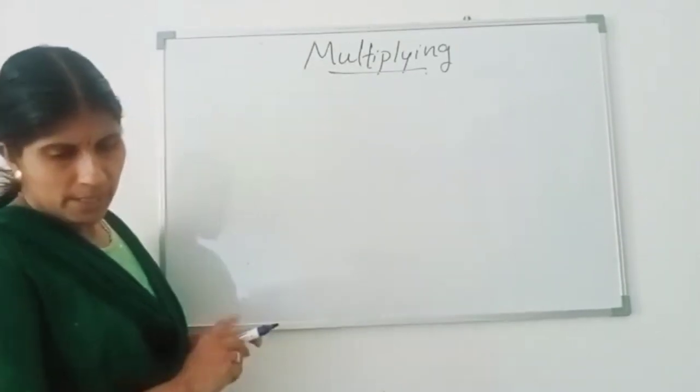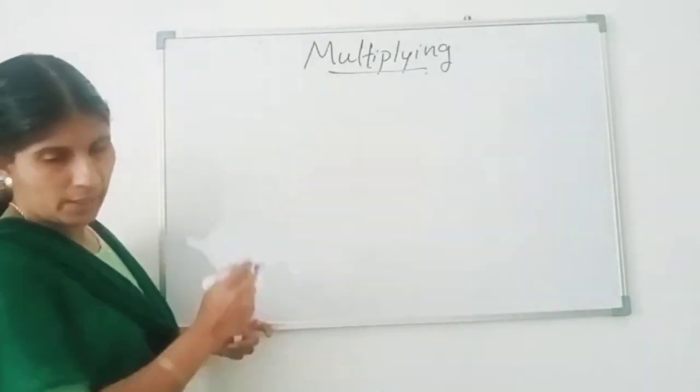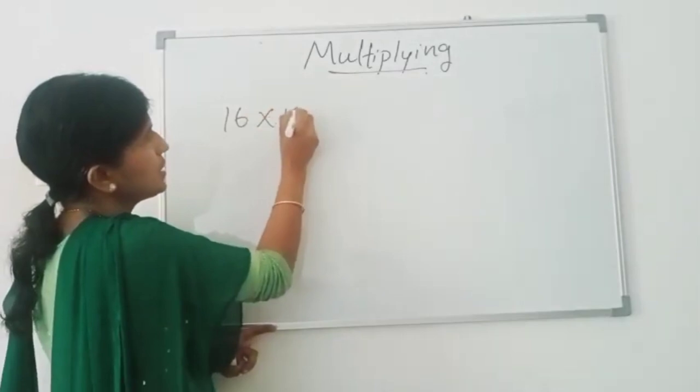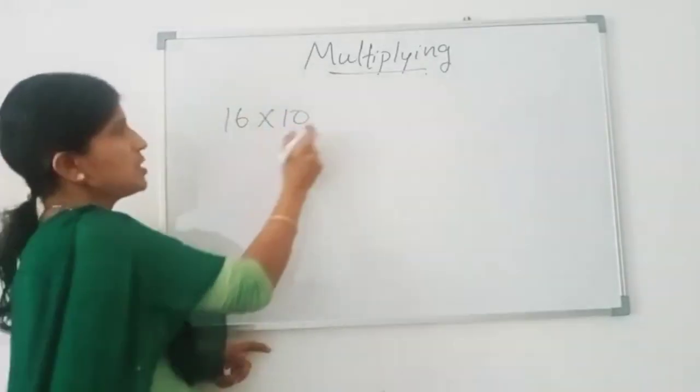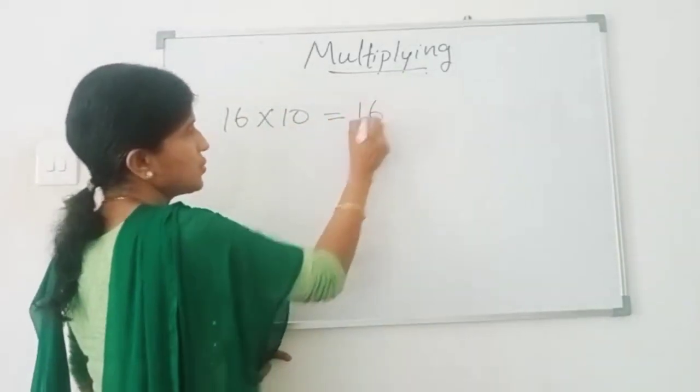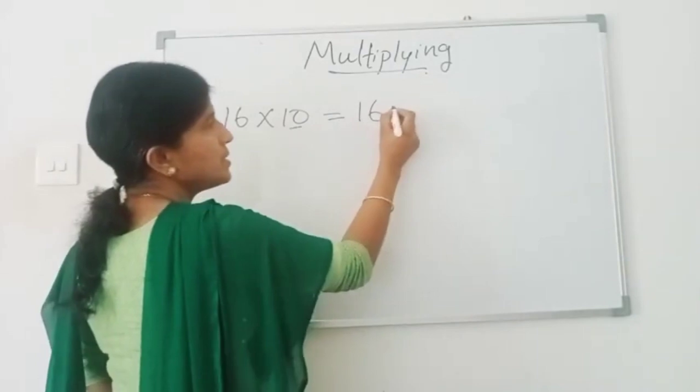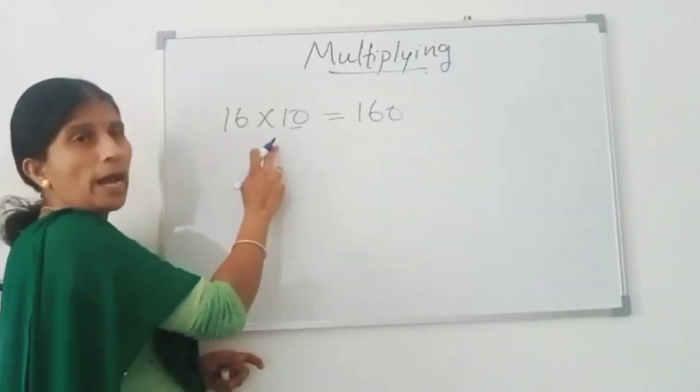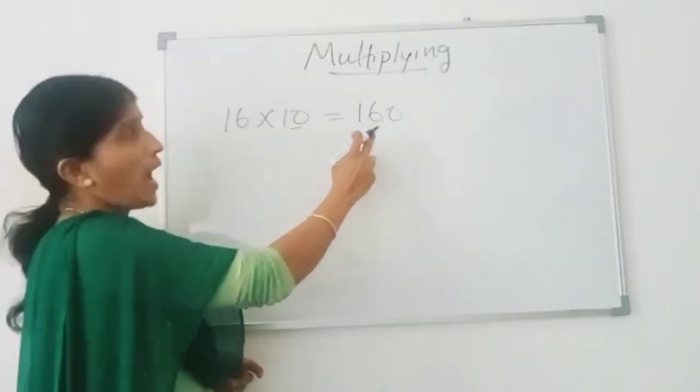Some questions are given here. 16 times 10. Just write 16 here and add this 0. So, 16 times 10 is equal to 160.